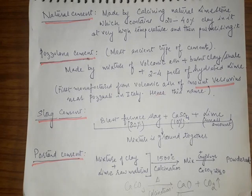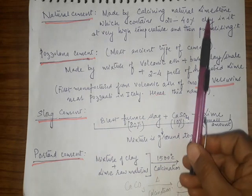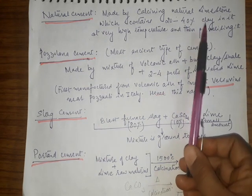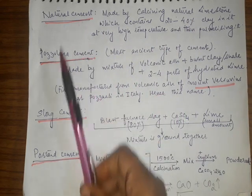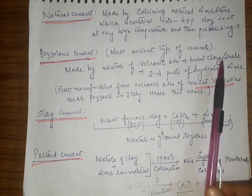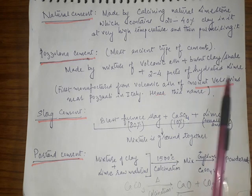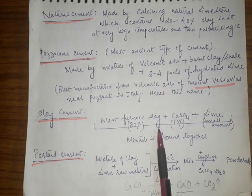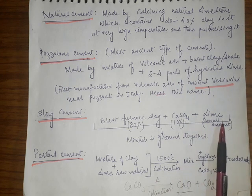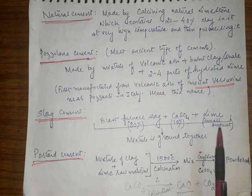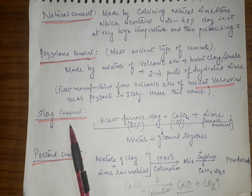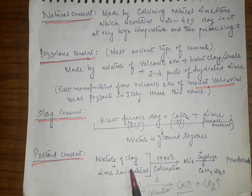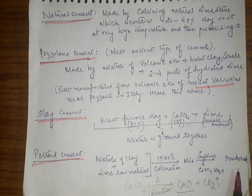To quickly revise: natural cement is made from naturally available limestone containing clay, both heated together at very high temperature. Pozzolana cement is made from volcanic ash and clay mixed with a small amount of lime. Slag cement is obtained from furnace slag mixed with calcium sulphate and lime, ground together. Portland cement uses a mixture of clay and limestone, calcined at very high temperature, mixed with gypsum, and powdered.